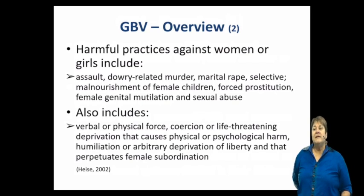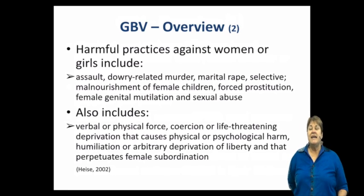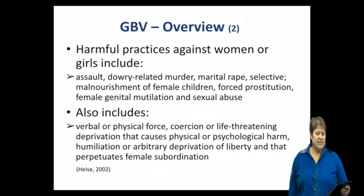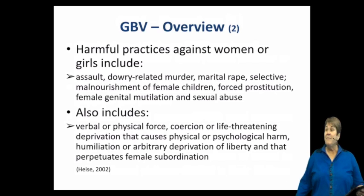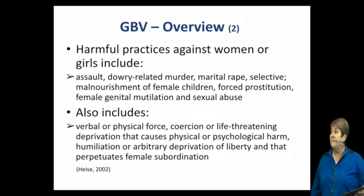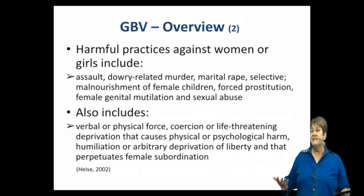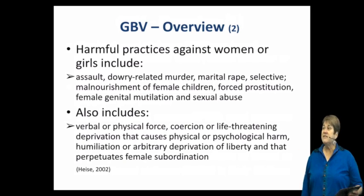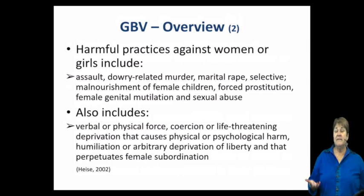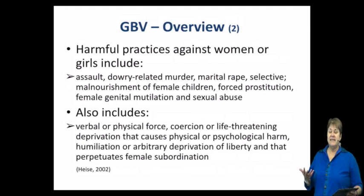There are a number of things classified as gender-based violence. Harmful practices include assault, dowry-related murders common in some areas of the world, marital rape, selective malnourishment of female children where male child preference exists, forced prostitution, female genital mutilation — though that is a somewhat contentious subject — and sexual abuse. All of those qualify as examples of gender-based violence against women.